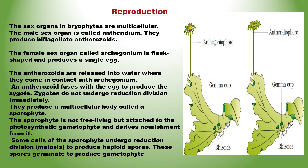Zygote में Meiosis तुरंत नहीं होती है। Zygote, Sporophyte बनाता है, जो Multicellular Body है। इनमें Sporophyte Free Living नहीं होती है, बल्कि यह Photosynthetic Gametophyte से जुड़ी होती है तथा इससे Nourishment प्राप्त करती है। Sporophyte की कुछ cells में Meiosis होती है तथा यह Haploid Spores उत्पन्न करती है। यह Spores Germinate होकर Gametophyte बनाते हैं।